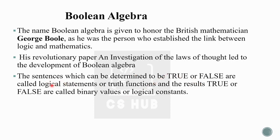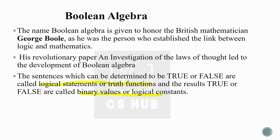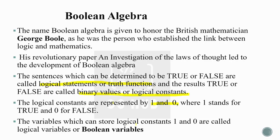The sentences which can be determined to be true or false are called logical statements or truth functions, and the results — true or false — are called binary values or logical constants. The logical constants are represented by one and zero, where one stands for true and zero stands for false. The variables which can store logical constants one and zero are called logical variables or boolean variables.